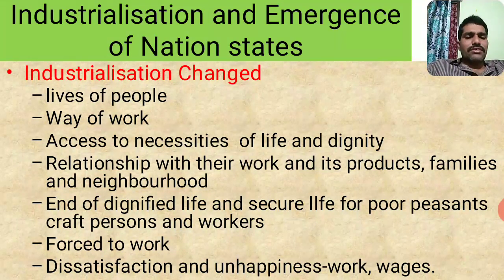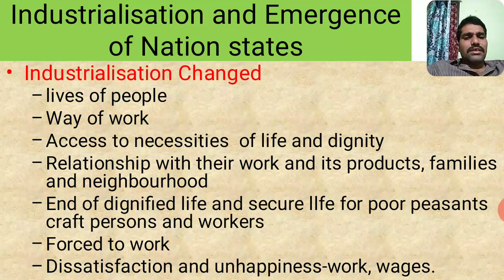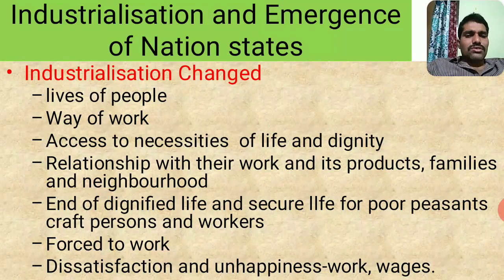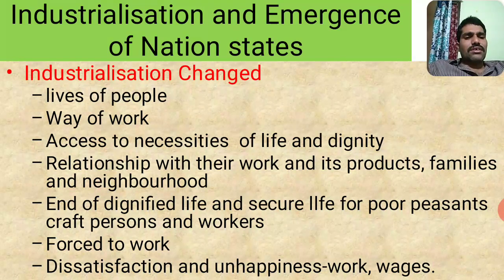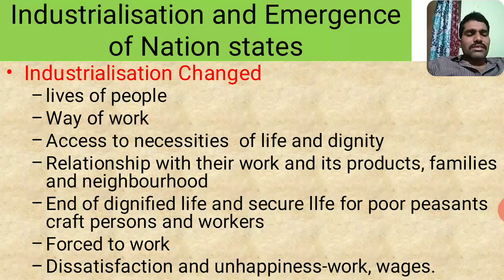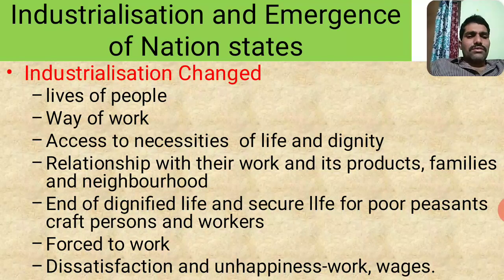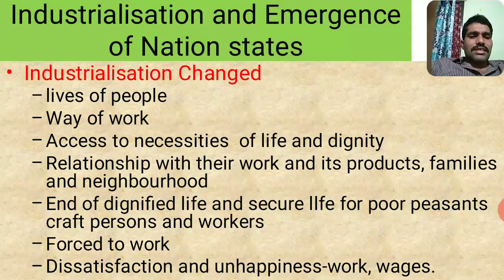Industrialization ended the dignified life and secure life. Industrialization gives impact on workers — they were forced to work because the industrialists always wanted to get more profits. They wanted workers to work more hours for less salaries, so it became forced labour. Workers and poor peasants had full dissatisfaction and unhappiness about their work and wages. Industrialists always thought about profits, giving less salaries to workers while demanding more work from them.